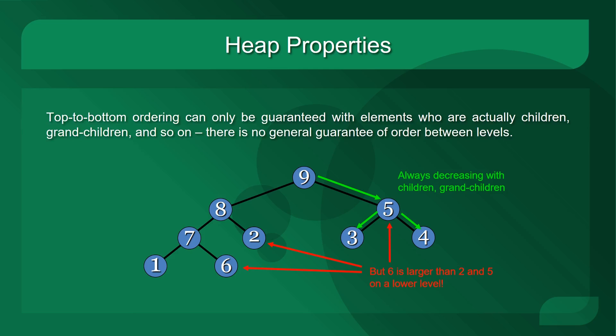For example, the element 9 at the root of our heap is always decreasing in value when you look at its children or grandchildren. In other words, 5 is less than 9, and 3 is less than 5 and 9, and so on. As long as we look at children, grandchildren, great-grandchildren, and so on, this relationship will always be true. But note that if we look strictly at the levels of this heap, we notice that 6, which is on the fourth level at the bottom, is in fact larger than elements on higher levels, like the 2 and the 5 in this example. This can always be possible in a heap. So the guarantee of this semi-ordering is only with children and grandchildren of a particular element.